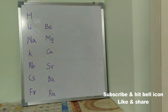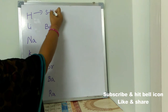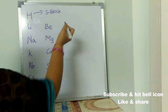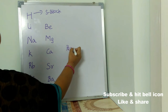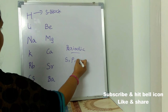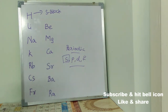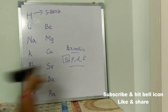The periodic table has S block, P block, D block, and F block. First let's learn about S block — how to remember it completely — and after that we'll see about the P, D, and F blocks.